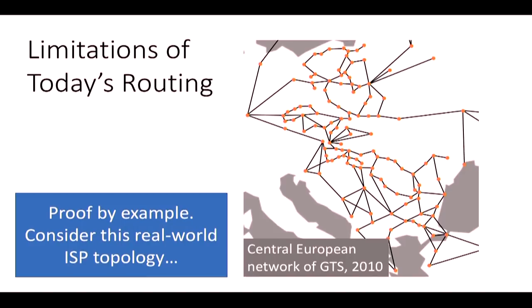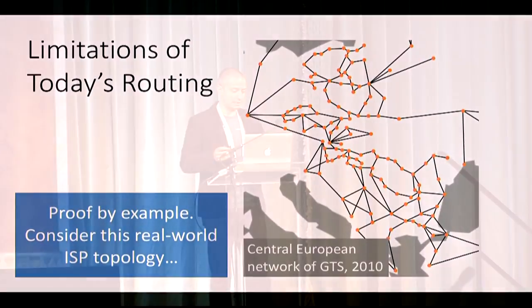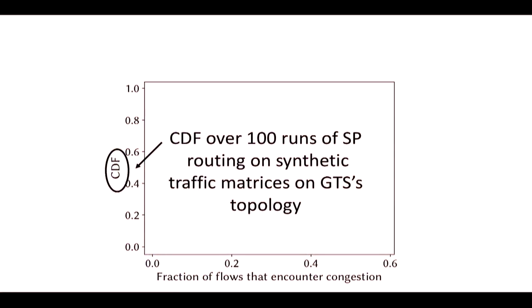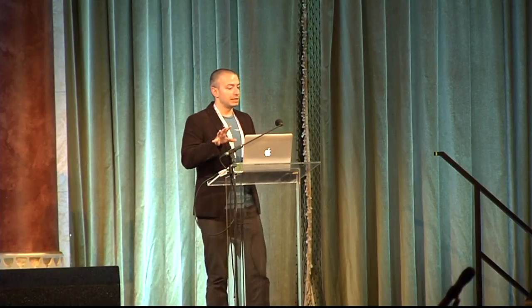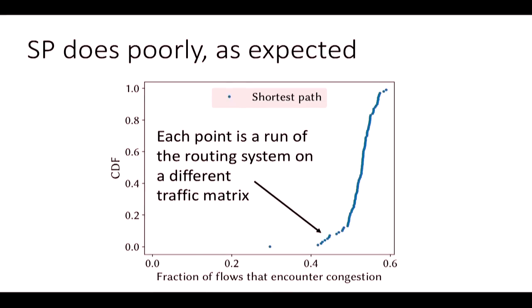We do 100 runs of shortest path routing using synthetic traffic matrices generated using the gravity model the community uses in the ISP setting. We plot a CDF where the x-axis shows for each traffic matrix the fraction of flows that cross at least one congested link. Shortest path routing does extremely poorly—about half the time, half the aggregates experience some sort of congestion.